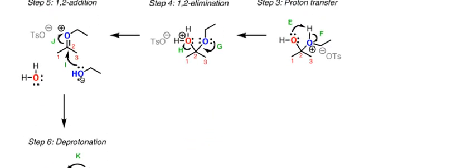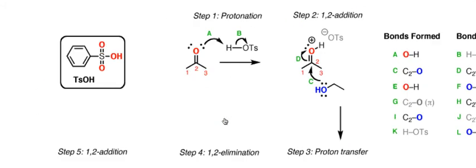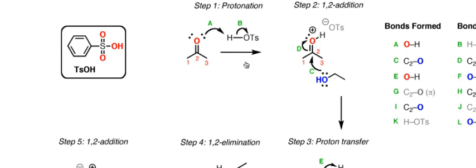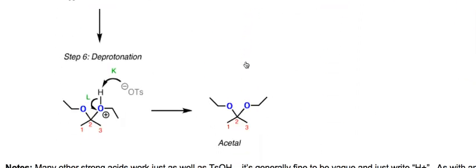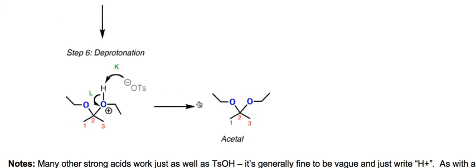We just have this hydrogen on the oxygen of ethanol to deal with and this is positively charged. Now we just need to remove it and then we'll get our neutral acetal. Here I'm showing OTs minus acting as the base here to remove the proton. That's because I use tosic acid as our acid, but really there's many different things you could use to show as the base in this case. You could also use another equivalent of ethanol or you could use water. It's really not crucial exactly which base you show acting here because many things could act as a base. In this specific example I showed this occurring.